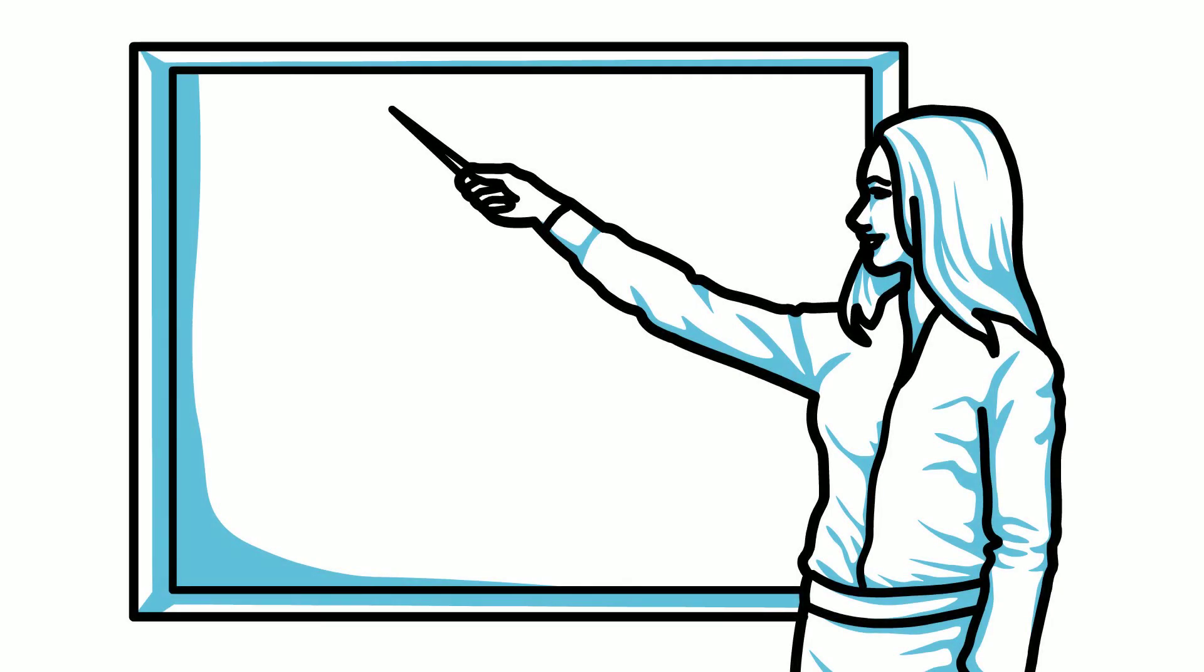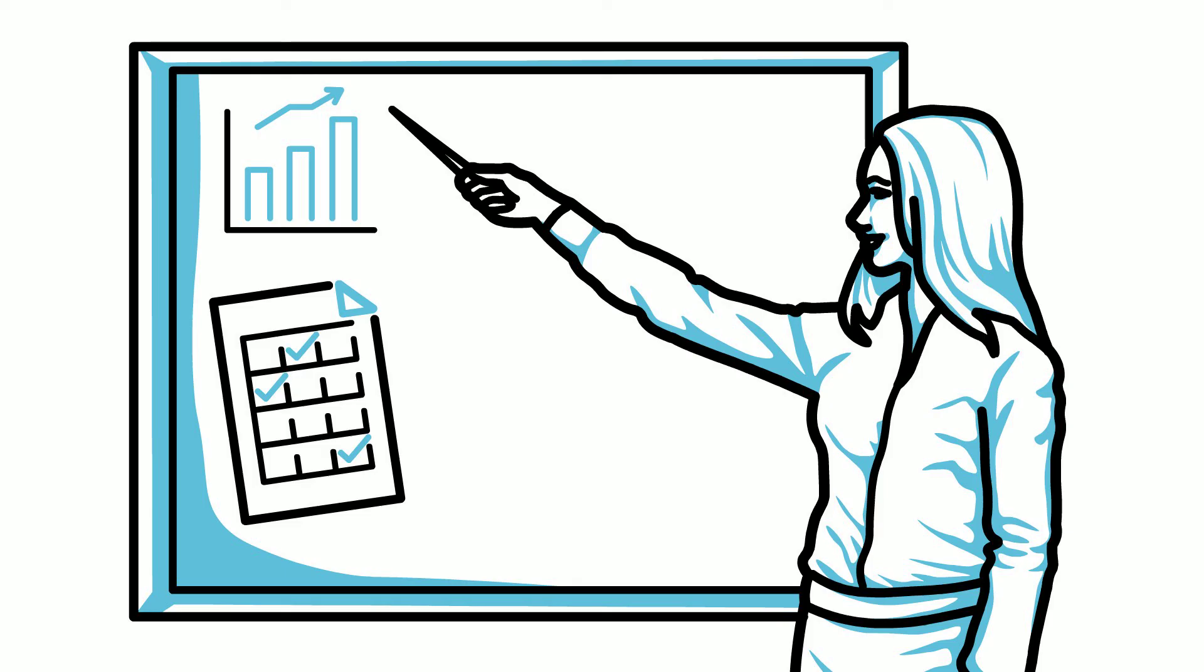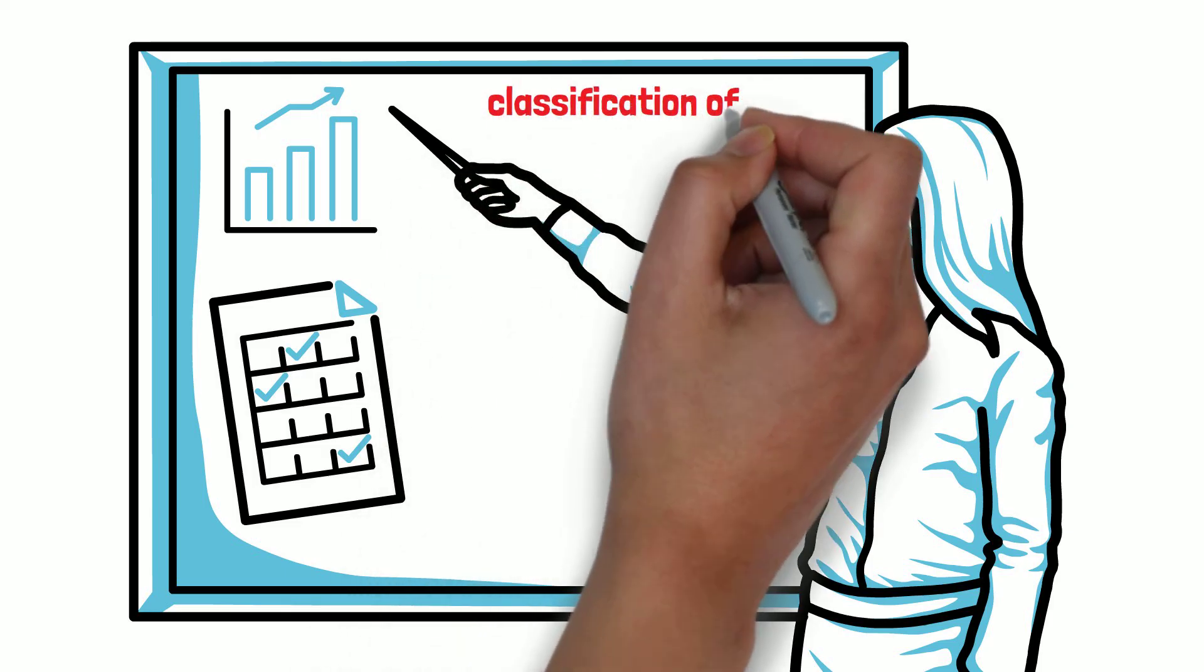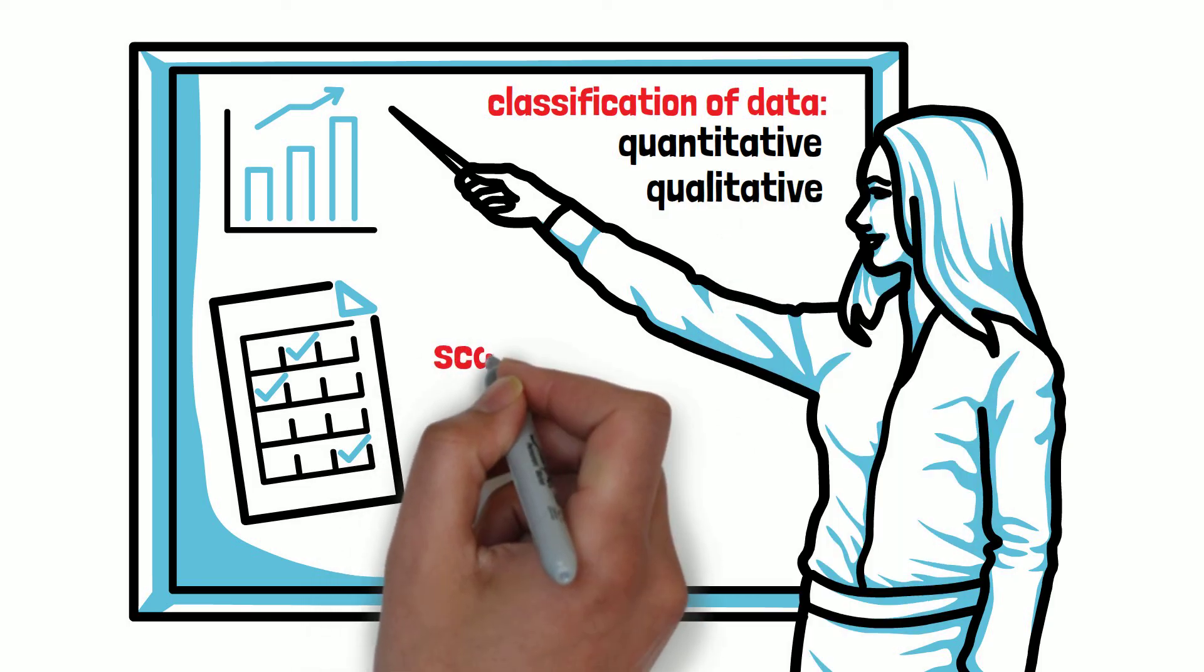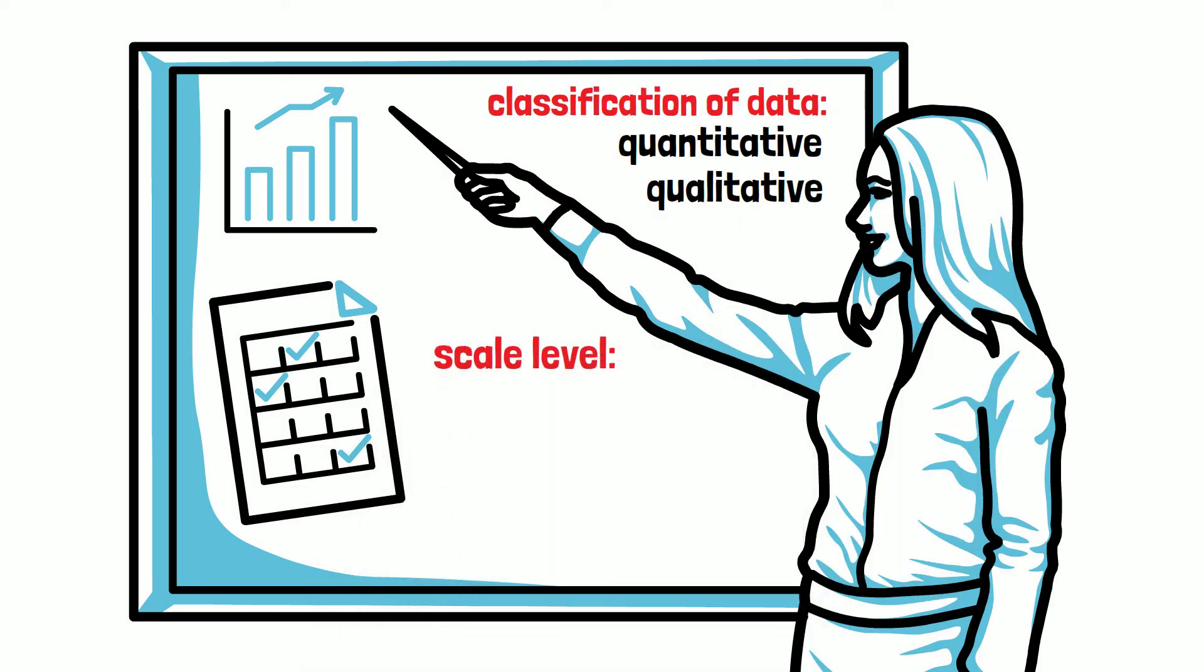When biostatisticians want to perform statistical analysis, they have to know what the data looks like. One of the most important aspects is the classification of the data into quantitative and qualitative, as well as the type of scale level that each variable has: nominal, ordinal or metric.